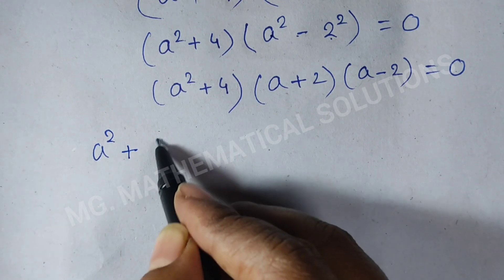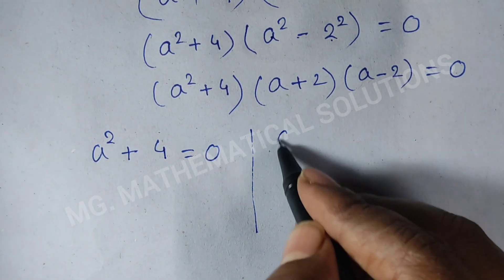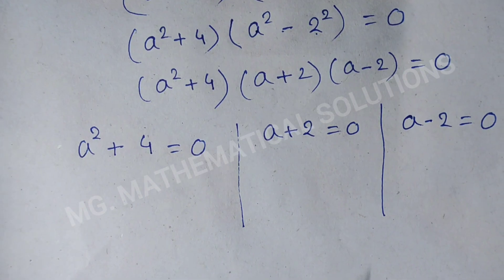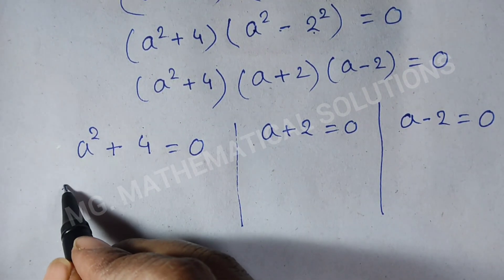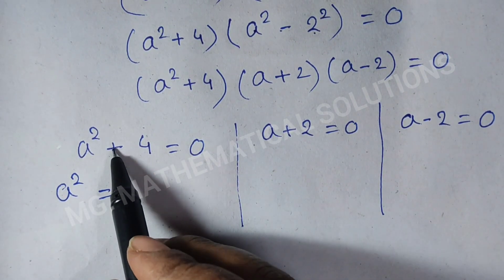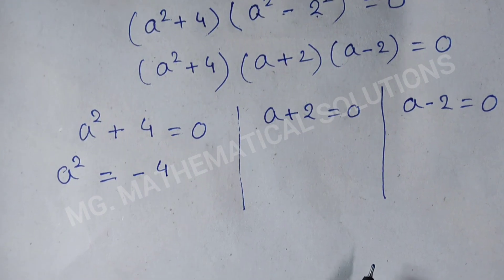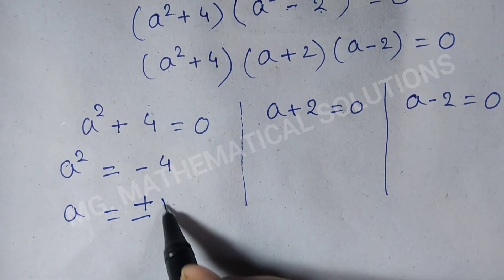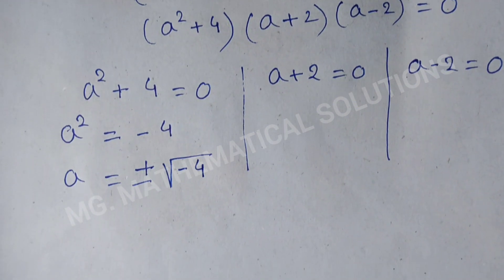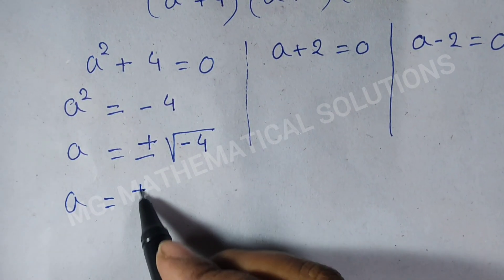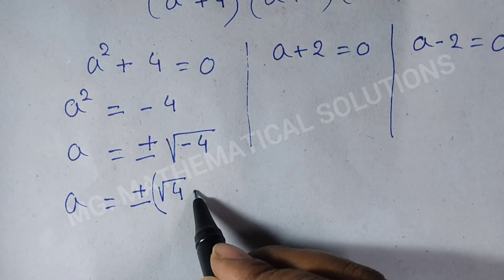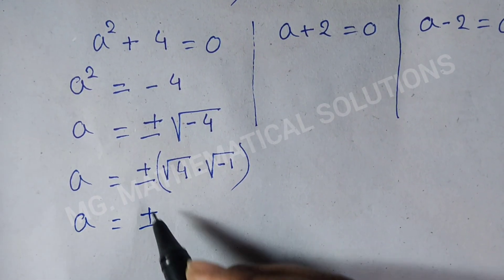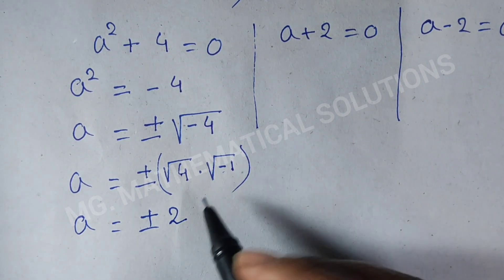For the first case, a squared plus 4 equals 0, so a squared equals minus 4. Removing the square, a equals plus or minus the square root of minus 4. We write root of minus 4 as root 4 times root of minus 1, which gives a equals plus or minus 2 iota.